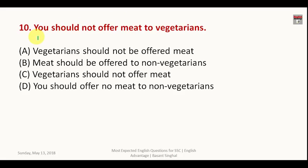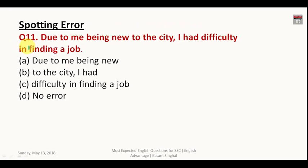Question number ten: 'You should not offer meat to vegetarians.' The passive form is: 'Vegetarians should not be offered meat.' The answer is A.